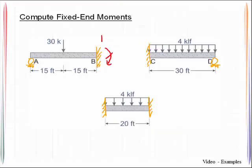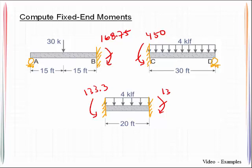And this would come up to be 168.75. This one would be 450. These would be 133.3. And because we have rollers out on the ends, this is going to be 0 and this is going to be 0.